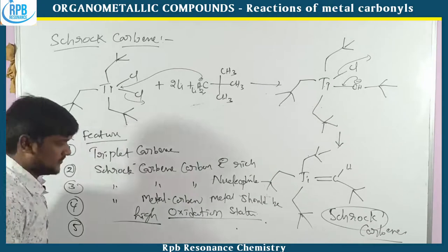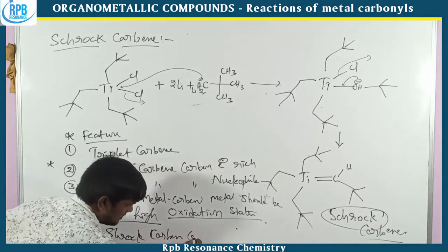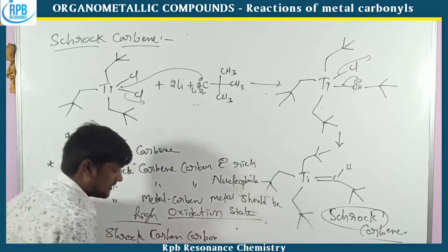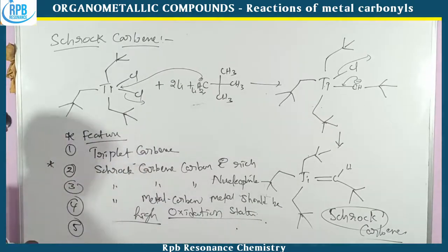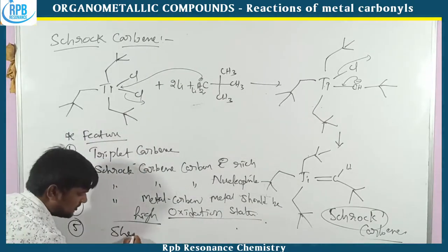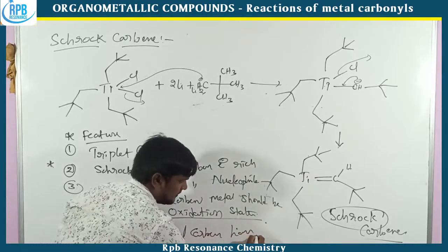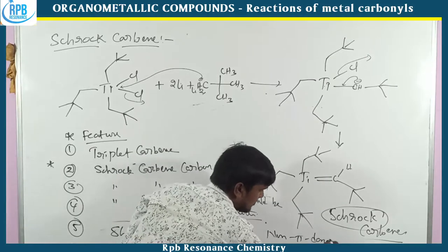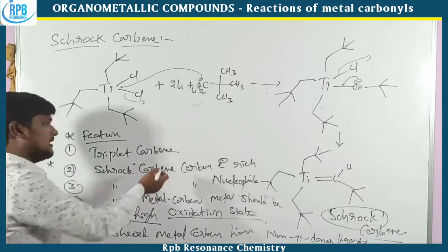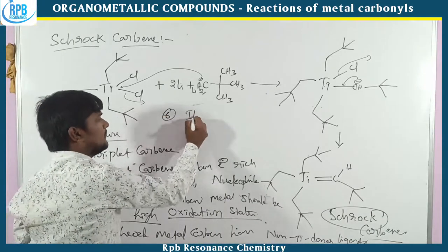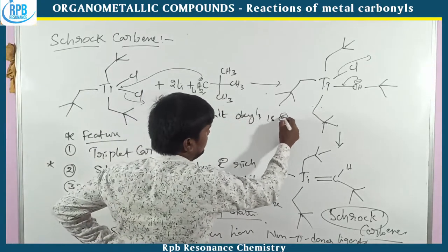Another point: Schrock metal carbene has non-pi-donor ligands — non-pi-acceptor ligands. Another feature: it cannot obey the 18-electron rule. Schrock carbene does not follow the 18-electron rule.